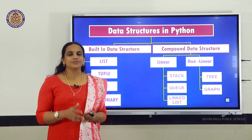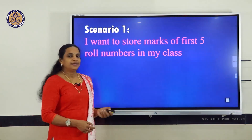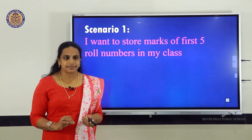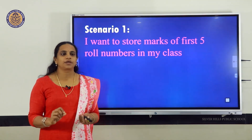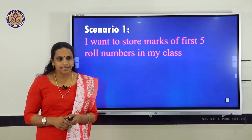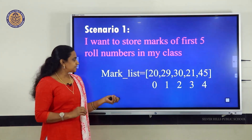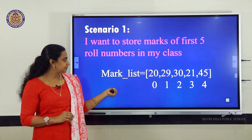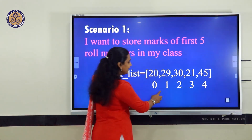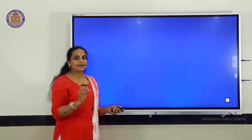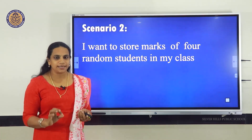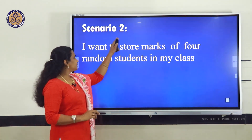We will move through two scenarios. In the first scenario, I want to store marks of the first 5 roll numbers in my class. Which data structure is suitable? Obviously, we will go for list. List is very easy to maintain, can grow or shrink in size, and can be processed using indices like 0, 1, 2, 3, 4. Therefore, list is the best data structure for maintaining consecutive data.